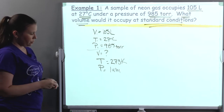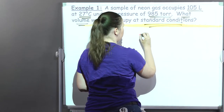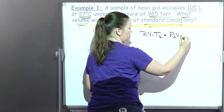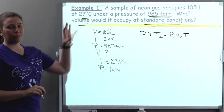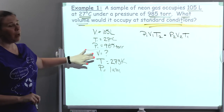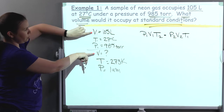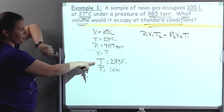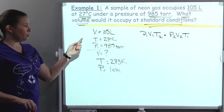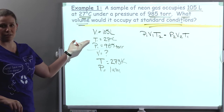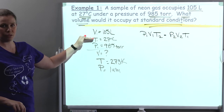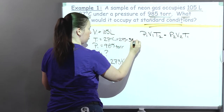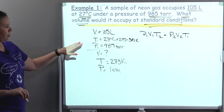So now I've got my list of variables. I want to go ahead and write down my formula: P1 V1 T2 equals P2 V2 T1. Before I can plug anything in, I want to check my units. For temperature, one is in Celsius and one is in Kelvin — that's a problem. They're different and they can't be different, and one of them is in Celsius and it can't be in Celsius. So we're going to add 273, which gives 300 Kelvin.